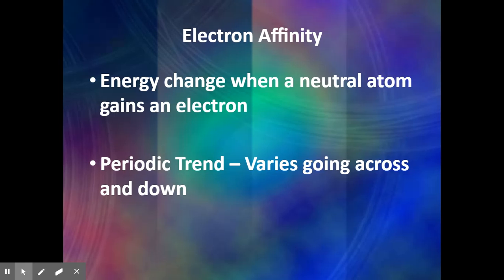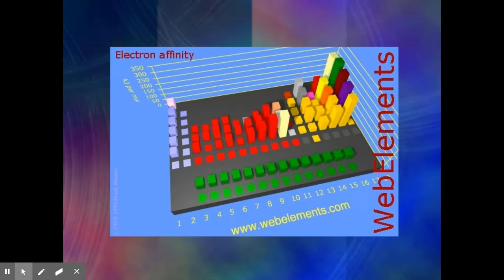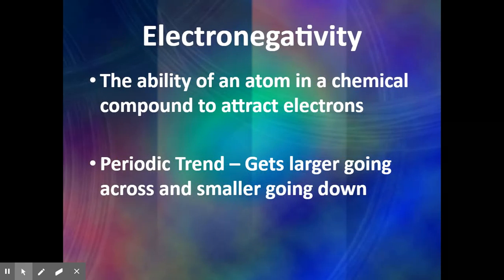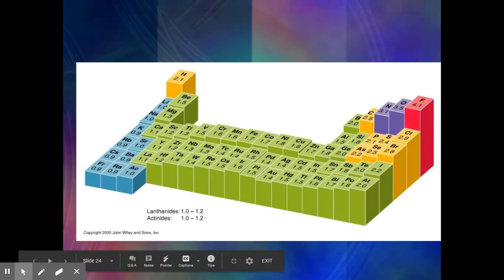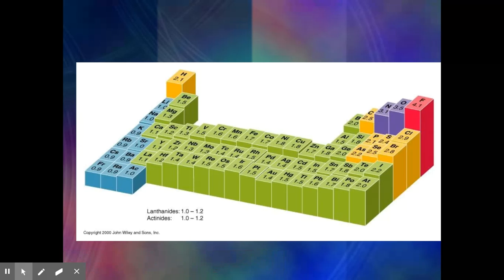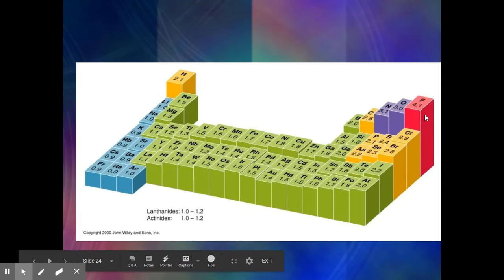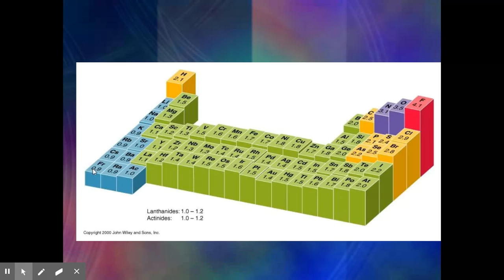Electron affinity is the energy change when a neutral atom gains an electron. This varies depending on the number of valence electrons, so it's rather staggered throughout the periodic table. Electronegativity is the ability to attract electrons — how strongly an atom wants to gain an electron. Generally, electronegativity gets larger going across the table and smaller going down. Fluorine has the highest electronegativity because it has 7 valence electrons and really wants that one additional electron. We will use electronegativity to determine what type of bond atoms form in later chapters.